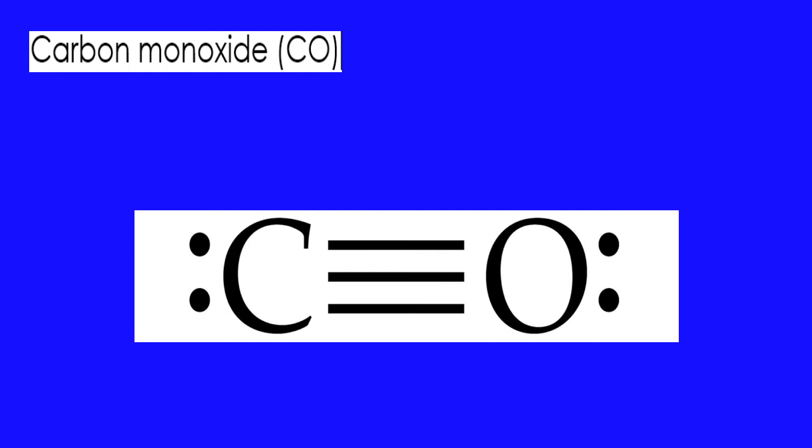Number seven: carbon monoxide. For the carbon monoxide Lewis structure, you'll need a triple bond between the carbon and oxygen atoms in order to satisfy the octets of each atom.